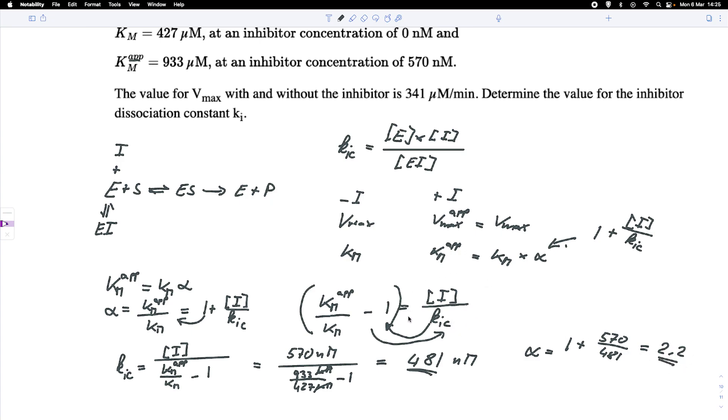So that shows how we can calculate the KIC for a competitive inhibitor if we've got KM up and KM and the inhibitor concentration. So I hope this makes sense, and thank you very much for watching.